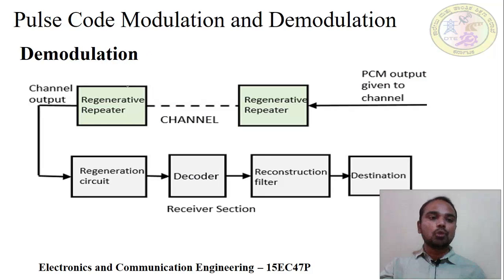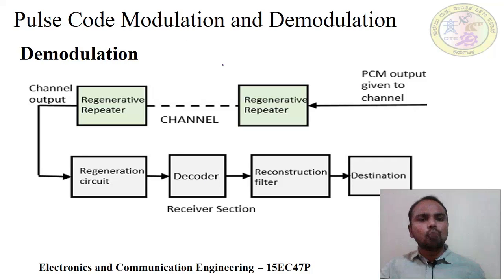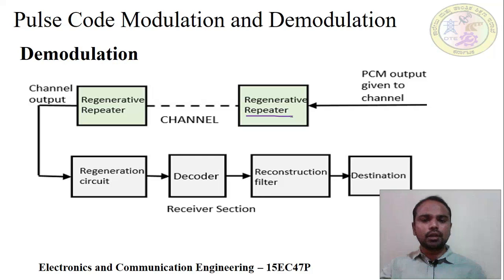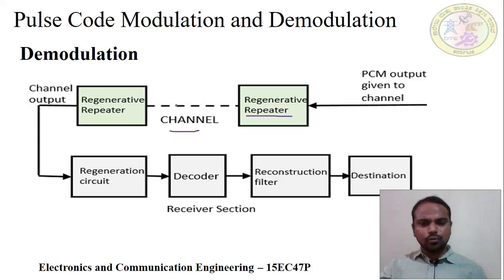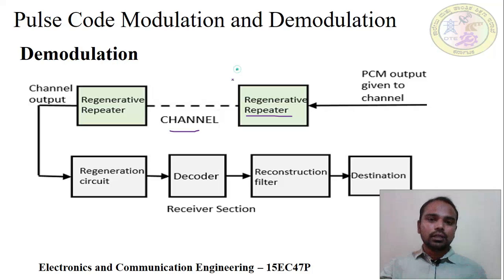Now coming to demodulation. Demodulation is a very simple process — it is the reverse process of modulation. The modulated signal passes through a regenerative repeater which increases the signal strength level. The channel may be wired or wireless. At the receiver side again we increase the signal strength. As a signal travels from transmitter to receiver, signal strength reduces over the distance, so we use a regenerative repeater.